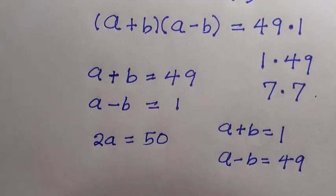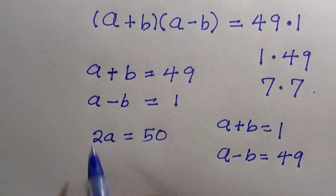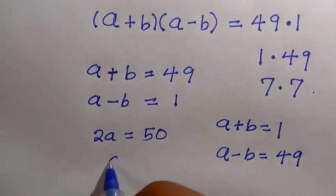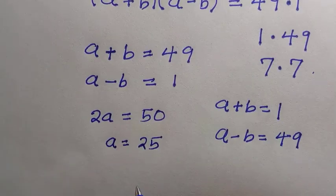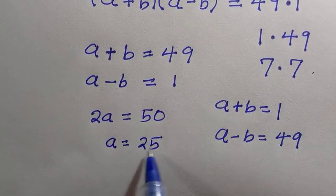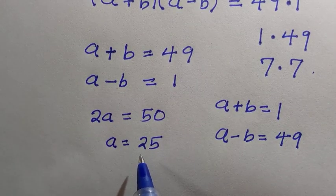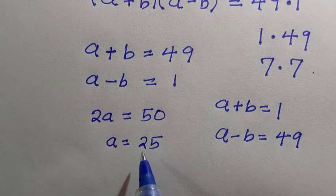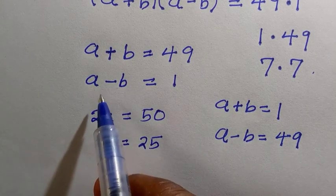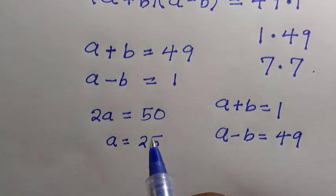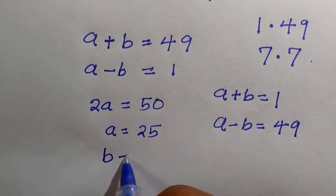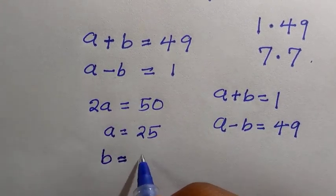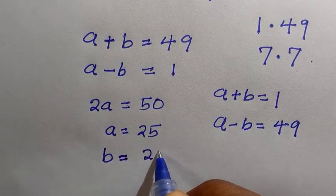To solve Case 1 simultaneously: adding the equations gives 2a equals 50, so a equals 25. To get b, we substitute a back into either equation. Doing that, we get the value of b to be 24.